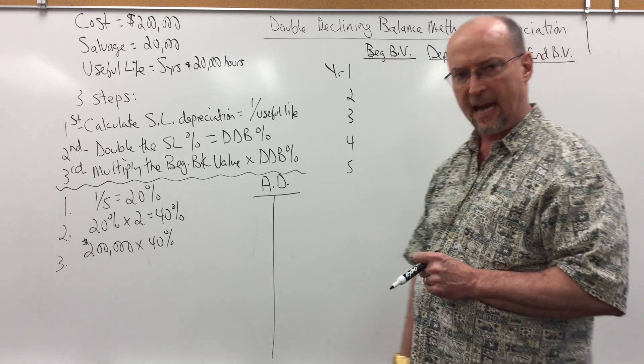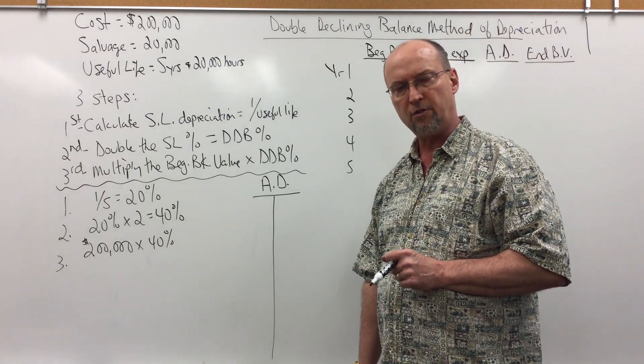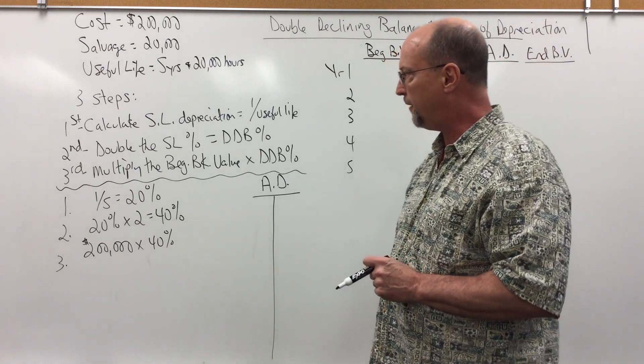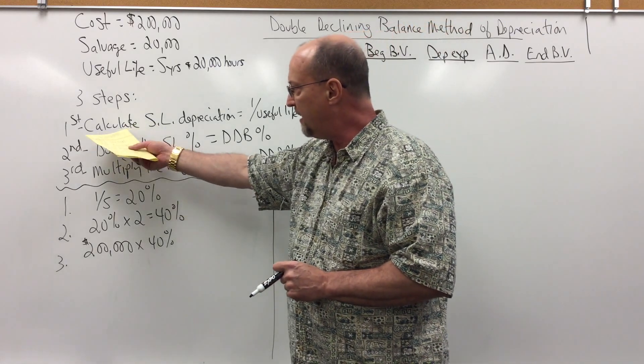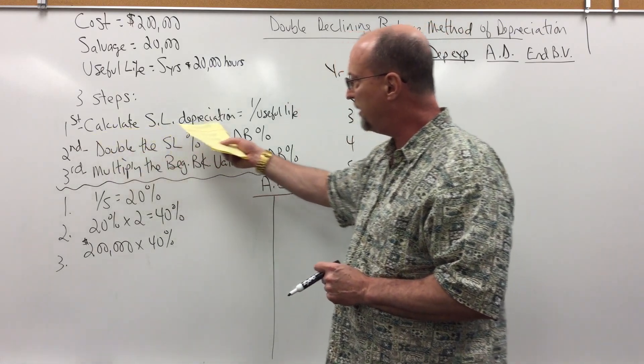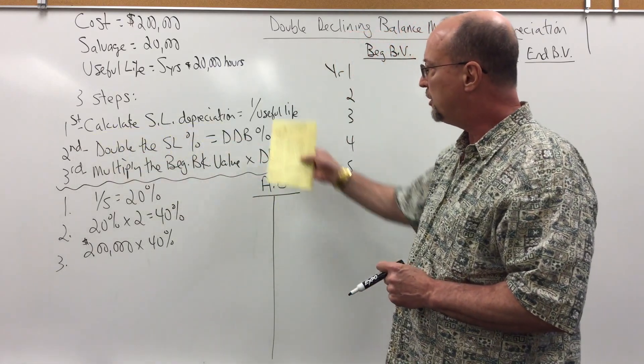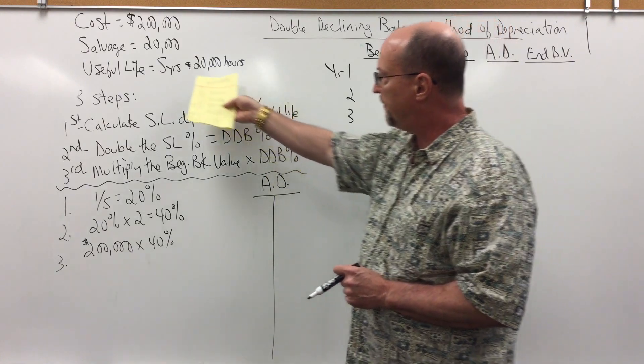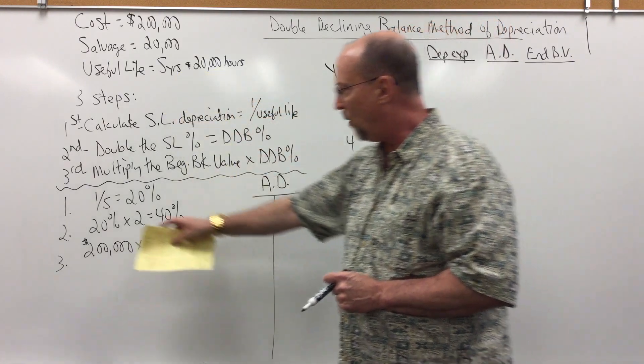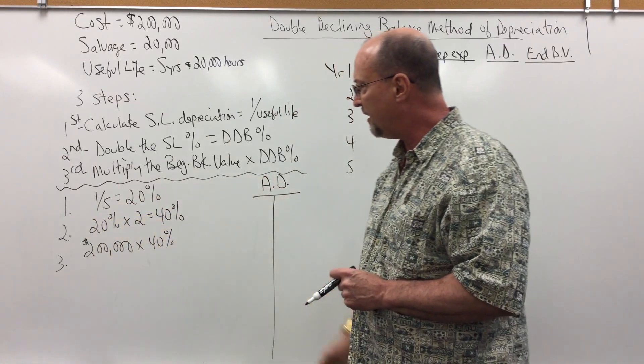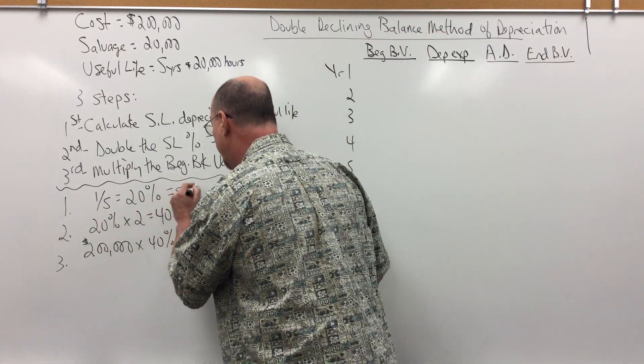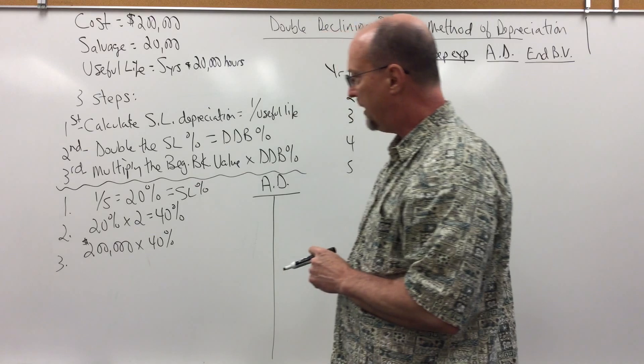And notice there are three steps when we use the double declining balance method. First, we calculate the straight-line depreciation percentage, which is 1 divided by the useful life of 5 years, 1 divided by 5, my straight-line percentage is 20%.